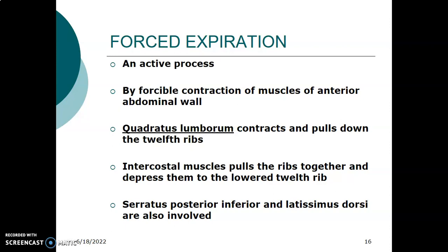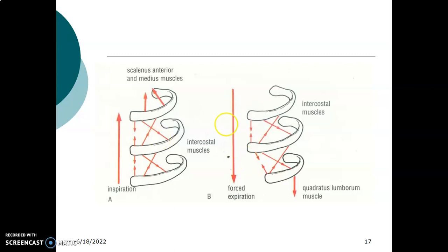The muscles involved in forced expiration are: the anterior abdominal muscles contracting, quadratus lumborum contracting and pulling down the 12th rib, intercostal muscles pulling the ribs together and depressing them, and serratus posterior inferior and latissimus dorsi. It is an active process in which you depress the ribs, bring them close to each other, and quadratus lumborum acts on the ribs to cause forced expiration.